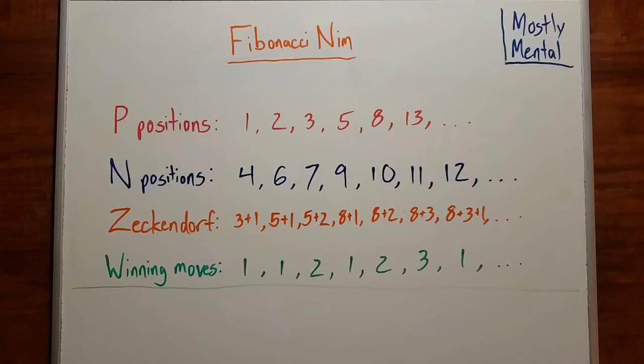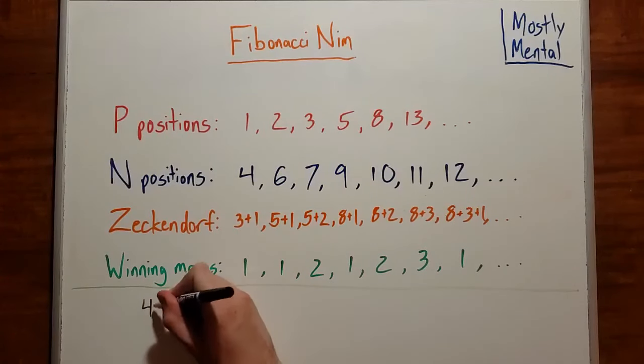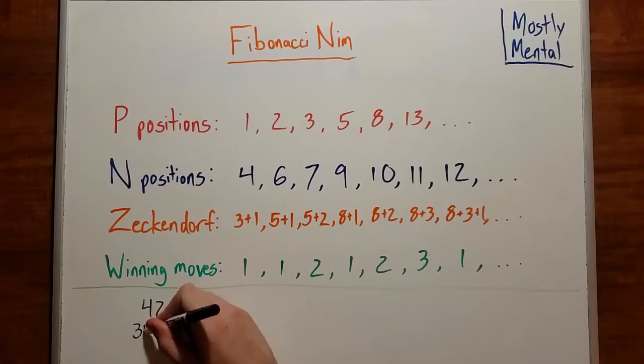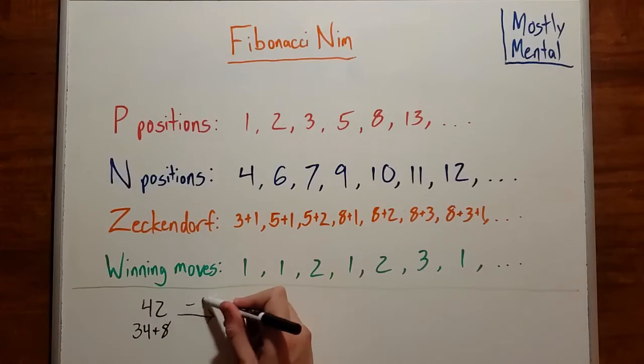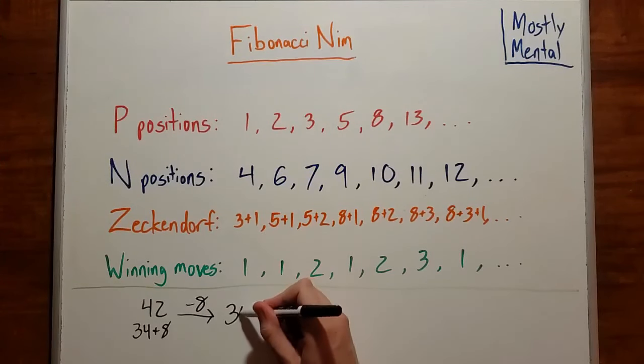Does this strategy really work? And if so, why? To answer that, let's try it for a few moves to see how things play out. Let's start with a pile of size 42, which is 34 plus 8. Our strategy tells us to remove that smallest term, 8, and leave the opponent with 34. Can the opponent do the same? Well, no. 34 is a Fibonacci number, so the Zeckendorf representation is 34.